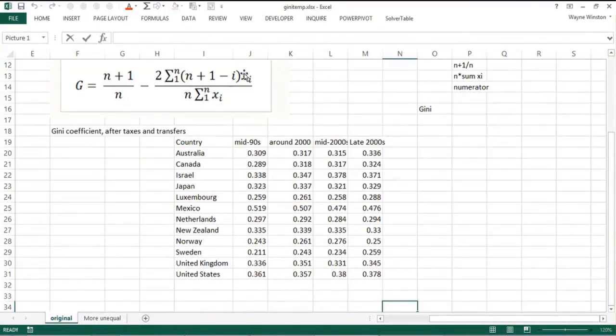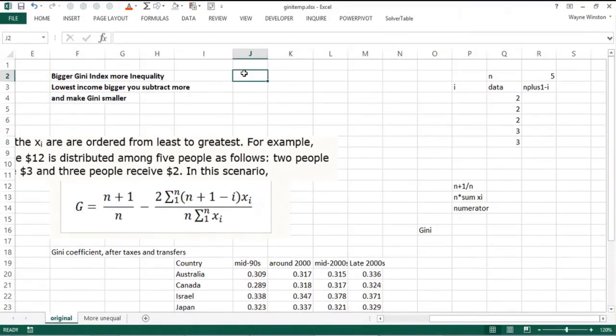In this video we're going to talk about economic inequality and how we can use Excel to understand how economists measure economic inequality using the Gini index. There's been a big emphasis in the last few years on economic inequality—you'll have your own opinion on it—but I think it was really popularized by a book called Capital by French economist Thomas Piketty. It's become a big issue in political campaigns around the world.